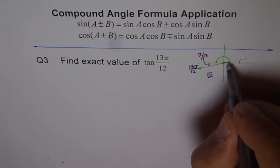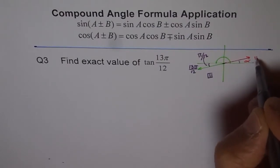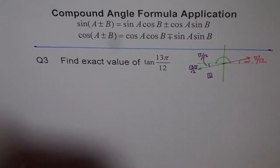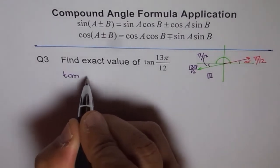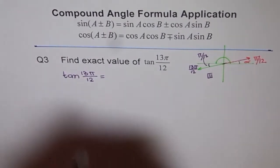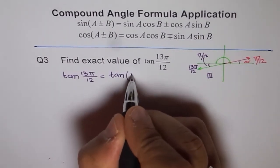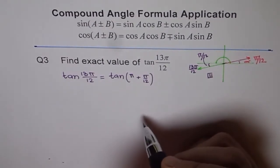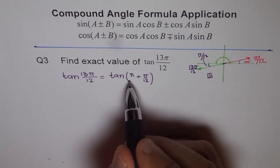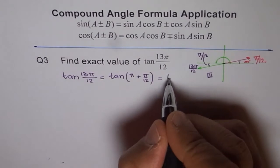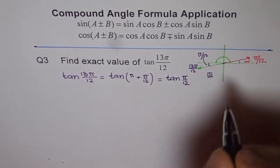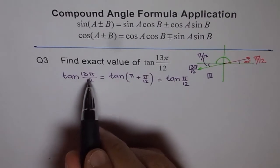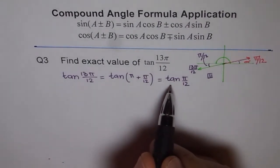We call this angle alpha, which is π by 12. We can use the related acute angle to solve this. The first step is that tan of 13π by 12 equals tan of π plus π by 12, which is 13π by 12. This π is 12π over 12, and this equals tan of π by 12 — tan is positive here. So the related acute angle for tan is π by 12, and therefore tan 13π by 12 equals tan of π by 12.